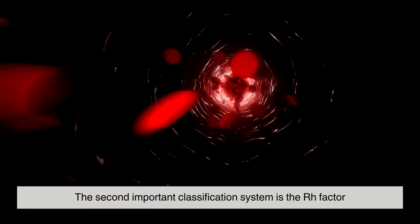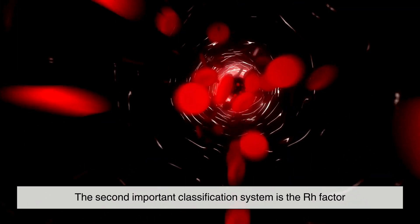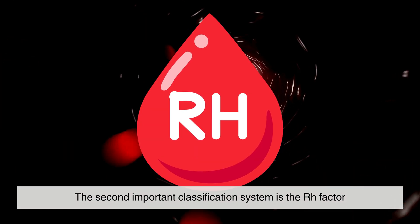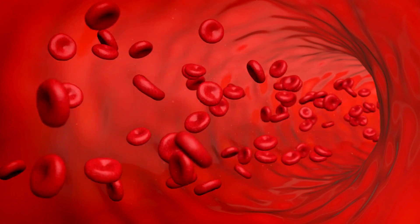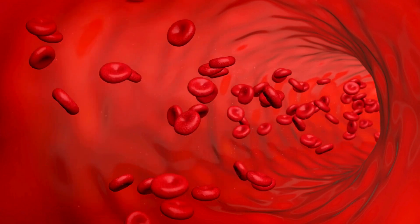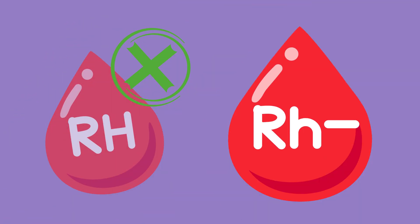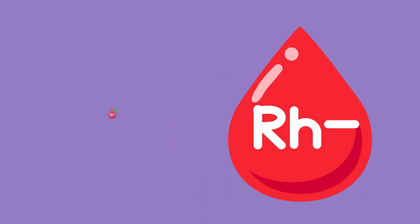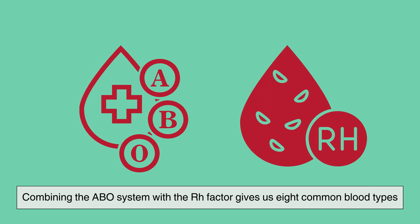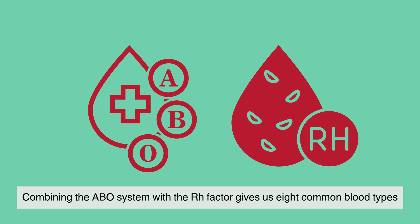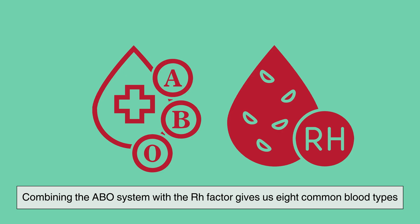The second important classification system is the Rh factor, which is another antigen that may or may not be present on red blood cells. If you have this antigen, you are Rh positive. If you don't, you are Rh negative. Combining the ABO system with the Rh factor gives us eight common blood types.